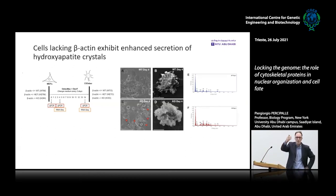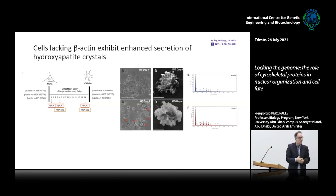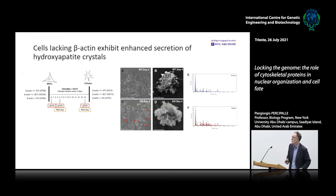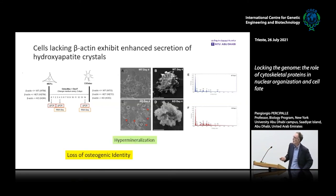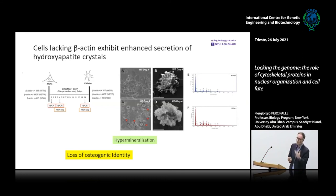This is interesting from a molecular genetics perspective and raises the question of what it means clinically — mutations in the actin gene could be tuning these processes. The bottom line is hypermineralization and loss of osteogenic identity. In this case we were able to map the mechanisms more precisely, which is why the work was published in Advanced Science.